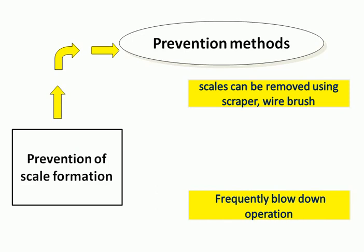What is the prevention of scale? What methods are followed for scale prevention? Scales can be removed by using a scrubber and wire brush — the rubbing method. Another method is thermal shock, used to remove the layer of scales from the metallic surfaces. Another method is the frequent blow down operation. In the blow down operation, during maintenance, the steam production is stopped for heating, all the salt deposits settle at the bottom of the boiler, the valve is opened, and the loosely precipitated salt deposits come out. Doing this frequently reduces scale formation.